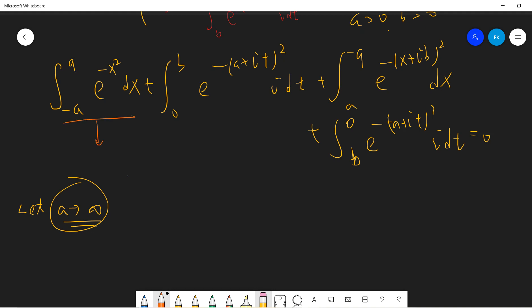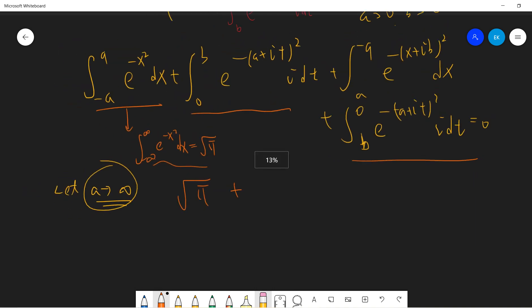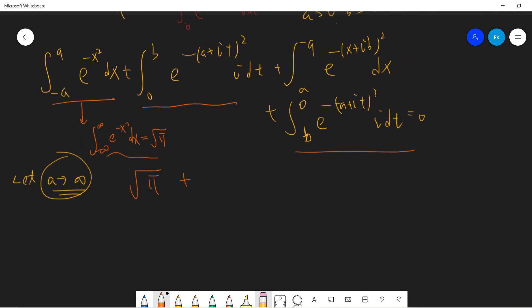If a goes to infinity, then the first one will basically be the so-called Gaussian integral. This is a famous result everybody should know; if you don't, I'll leave the link below. This is square root of pi.